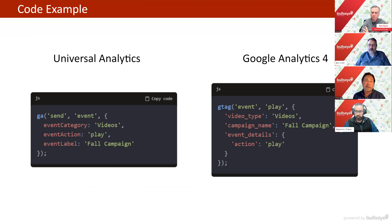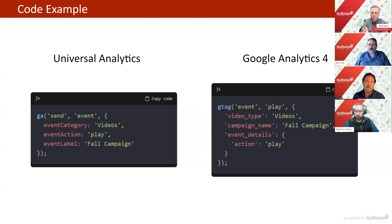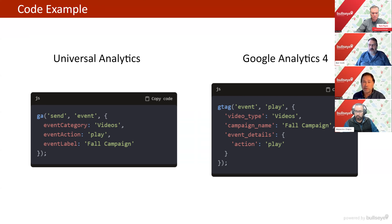Here's a quick visual on the difference in how data is collected at the code level. In old Universal Analytics, you had an event with the ability to categorize it, define an action, and define a label — very restrictive. The new approach lets you set an event and then add parameters like video type, campaign name, event details, and action — all set at the code level — and Google Analytics can automatically read those in as available data.